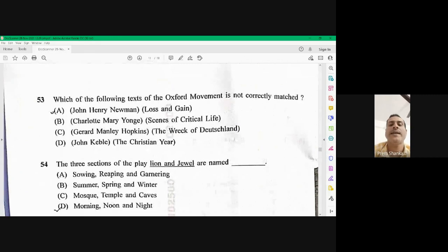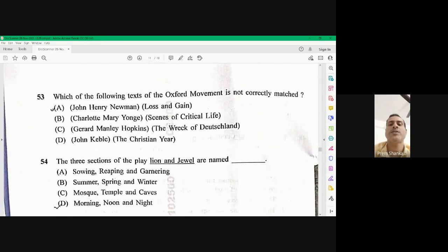Let's move on to question number 53. Which of the following texts of the Oxford movement is not correctly matched? So John Henry Newman has written loss and gain. That is correct. And Gerard Manley Hopkins written The Rake of the Dutchlands is correct. John Cable has written The Christian is correct. Scenes of critical life. There is no such book existing. Scenes of critical life.